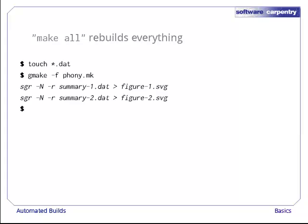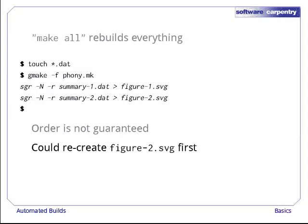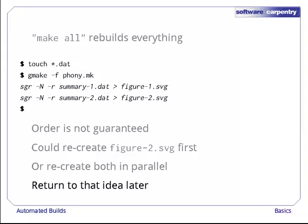Let's touch our data files again, and run make-f phony.make all. Sure enough, make runs the sgr command twice to recreate both figures. One thing to note, though, is that the order in which commands are executed is arbitrary. Make could decide to update figure2.svg first, rather than figure1.svg, because there's no dependency to respect between the two. Make could also update them in parallel if it had more than one processor to use. We'll return to this idea later.